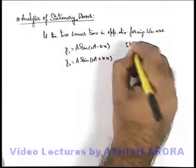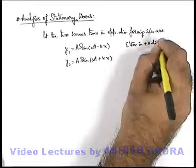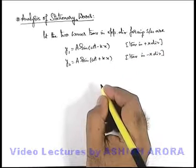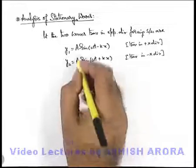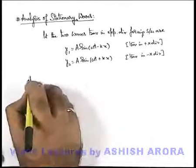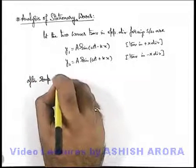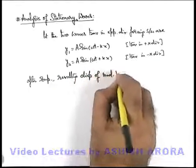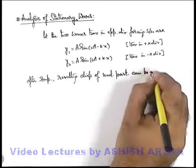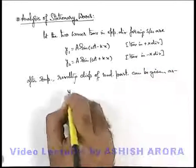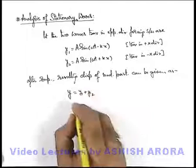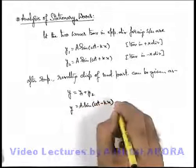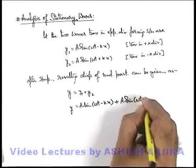The first wave is the one traveling in the plus x direction, and the second is the one traveling in the minus x direction. Now, in this situation, when these two waves superpose on a medium, the resulting displacement of medium particles after superposition can be given as y = y₁ + y₂, which gives us a·sin(ωt − kx) + a·sin(ωt + kx).